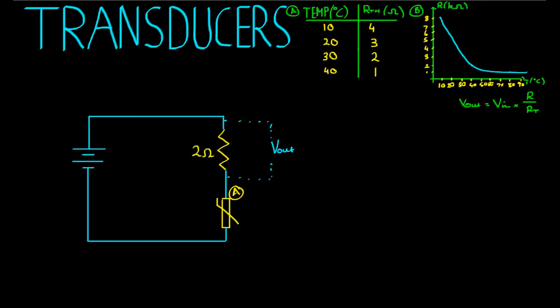Some thermistors are known as positive temperature coefficients. That means, as the temperature rises, as they get hotter, the resistance goes up. So a hot thermistor with a positive temperature coefficient has more resistance than if it were cooled down. But you can also get negative temperature coefficient thermistors. And negative temperature coefficient thermistors, as they get hotter, the resistance goes down.